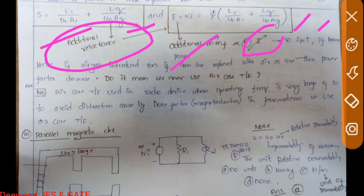This is why the induction machine power factor is very poor compared to a transformer. In an induction machine, Iμ is around 25–35% of full load, whereas in a transformer it is only 5–8% of full load. So a transformer at no load operates at around 0.25 power factor lag, while an induction machine operates at around 0.2 lag — there is a huge consequence from the air gap.